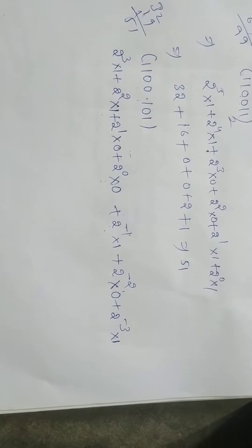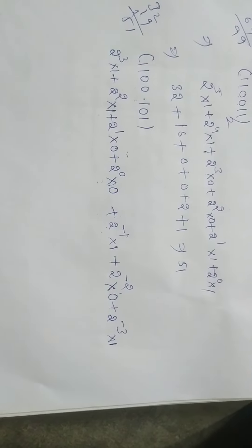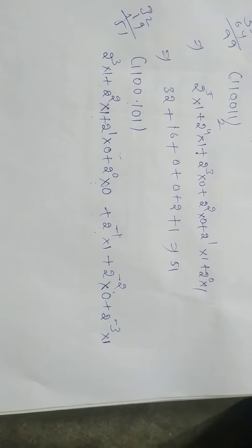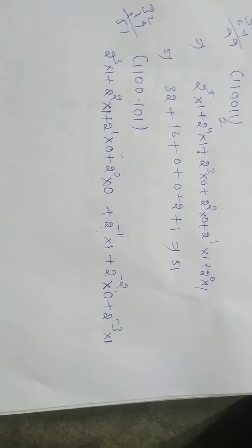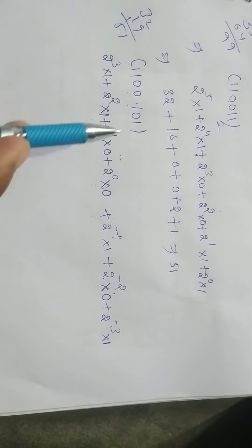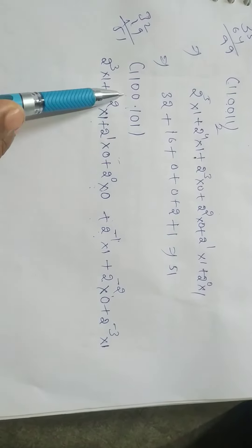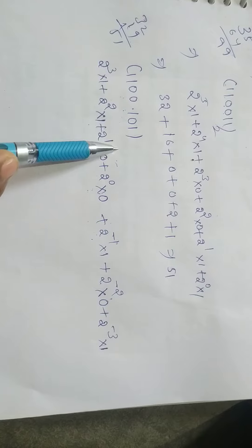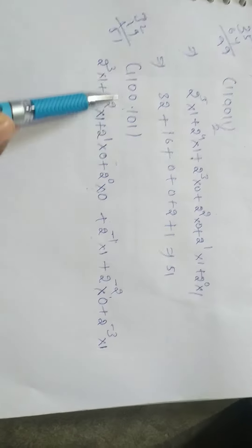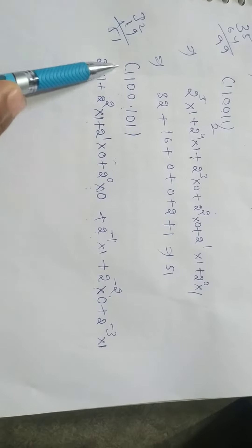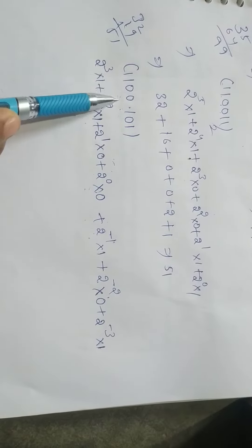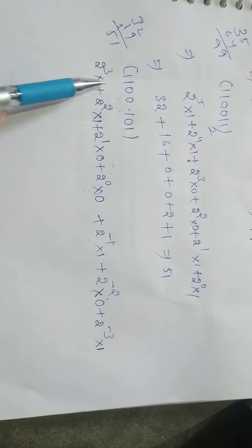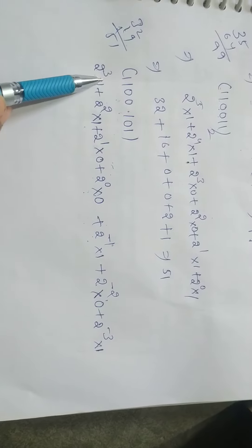Good morning. In this video we are discussing the topic of binary to decimal number conversion using floating point values. The example taken is the floating point value 1100.101. Before the decimal point, the powers are taken as positive values.